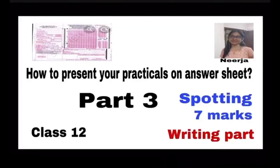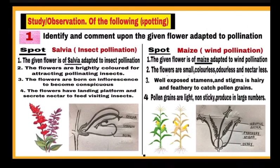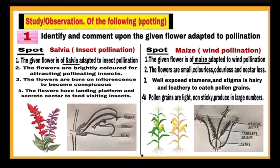Hello students, this is the third video based on practicals. In this video we will discuss about seven spots which are going to come in your practical exams. Let us see what you have to write and how to present these spots on answer sheet. This is the first category of spots you can get. Here you have to identify and comment upon the given flower adapted to pollination. Remember two things for writing spots: the first step in any spot should be the identification step, and write in total four points along with labeled diagram.